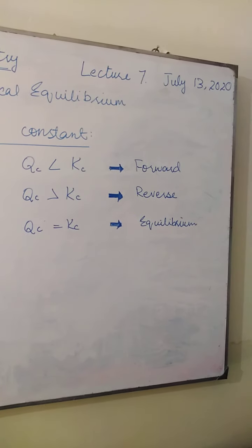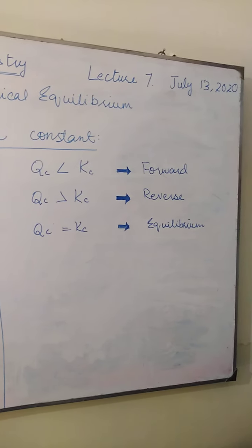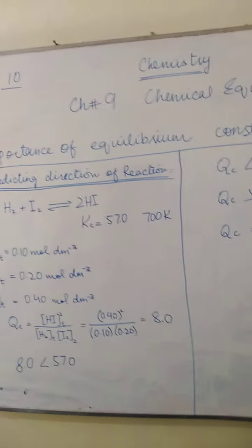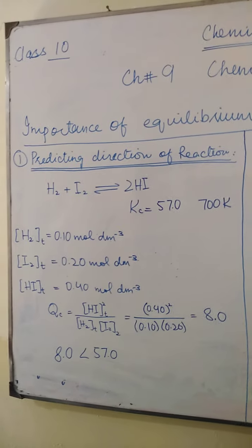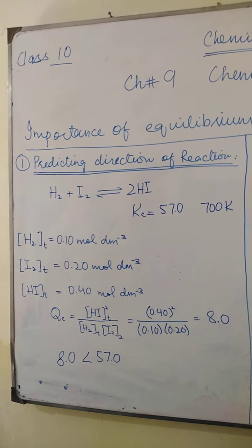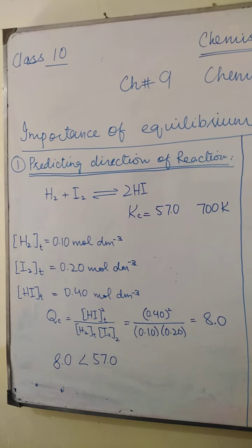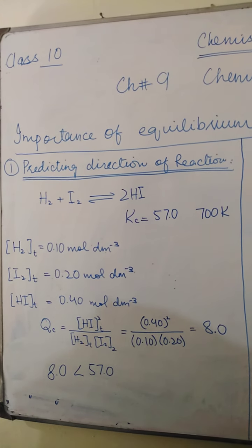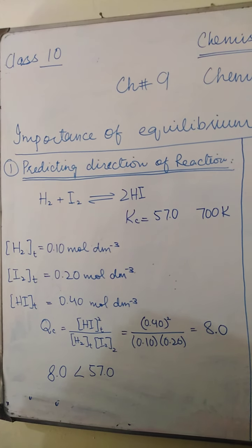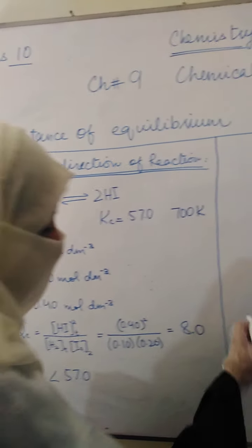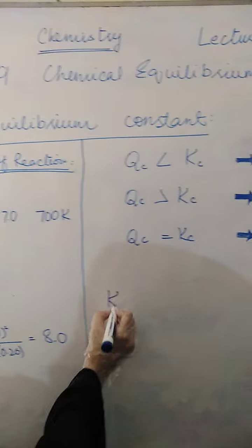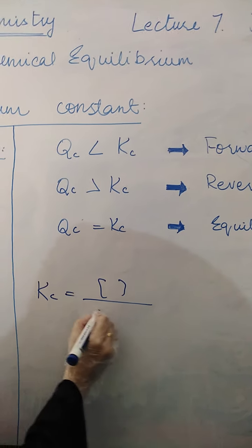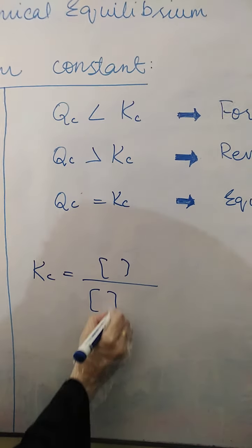Assalamu alaikum. This is lecture 7 of chemistry, chapter number 9, chemical equilibrium, and the topic is the importance of chemical equilibrium constant. What is the importance of equilibrium constant? Why do we use equilibrium constant with the products and reactants?